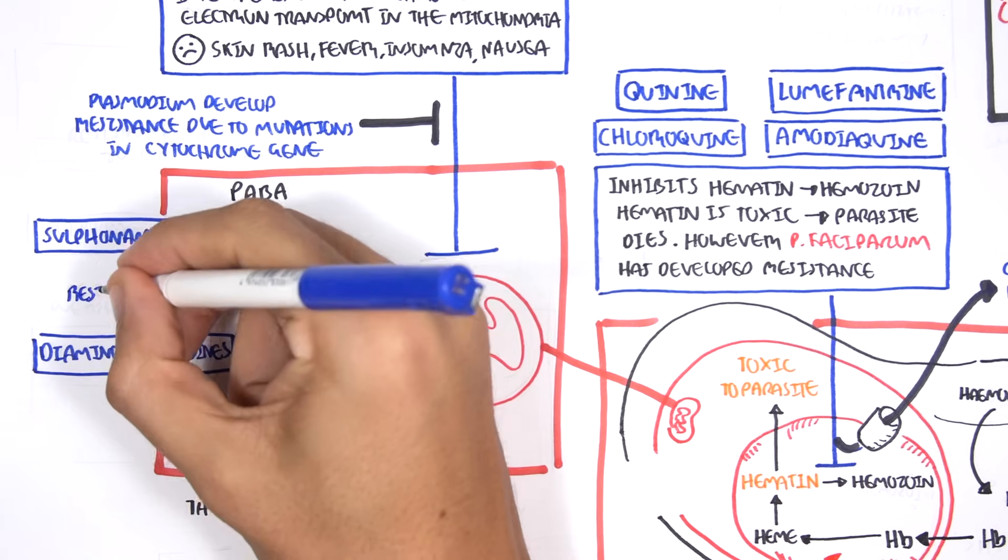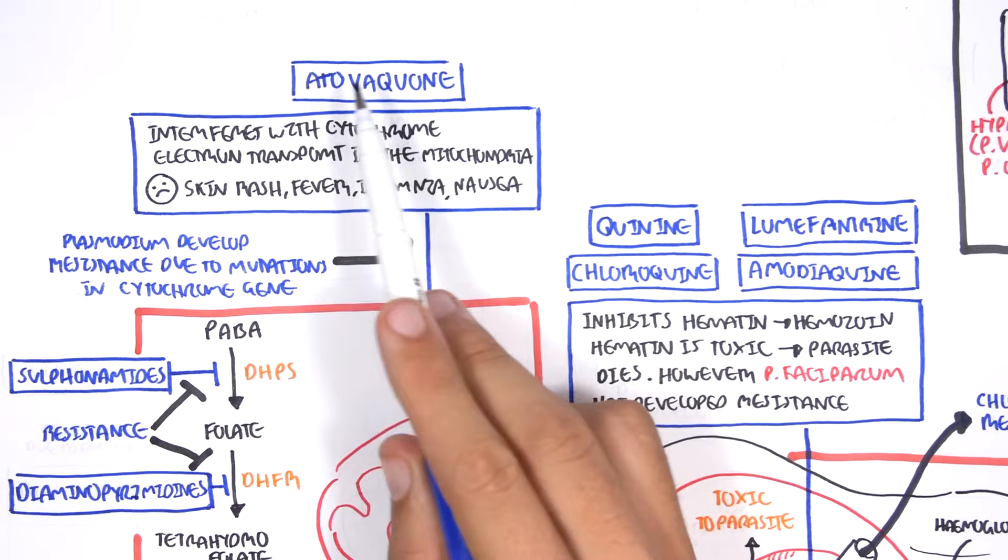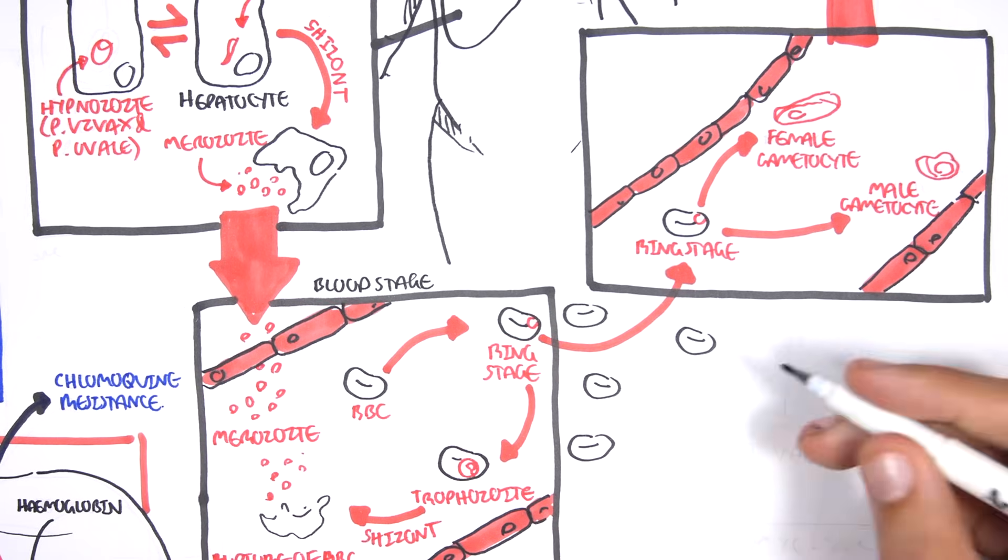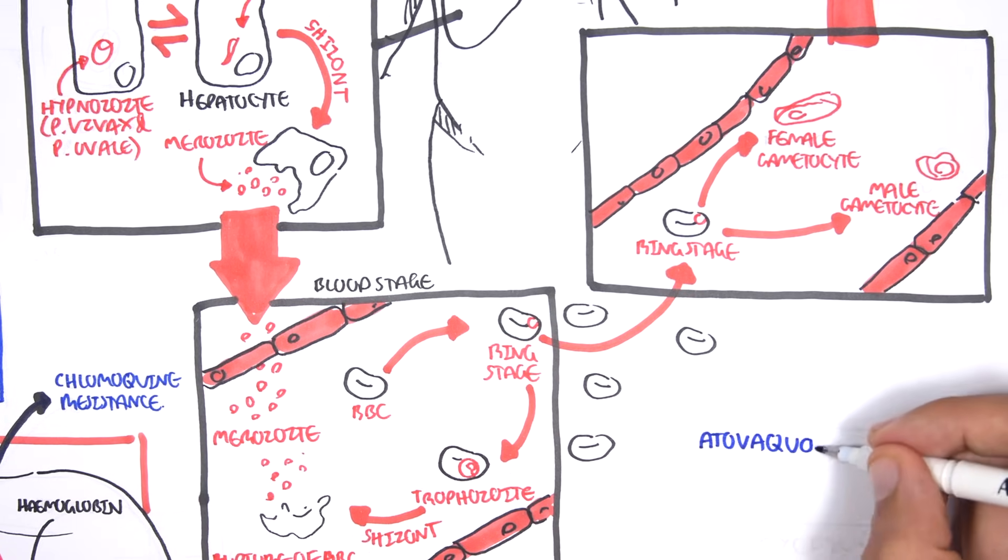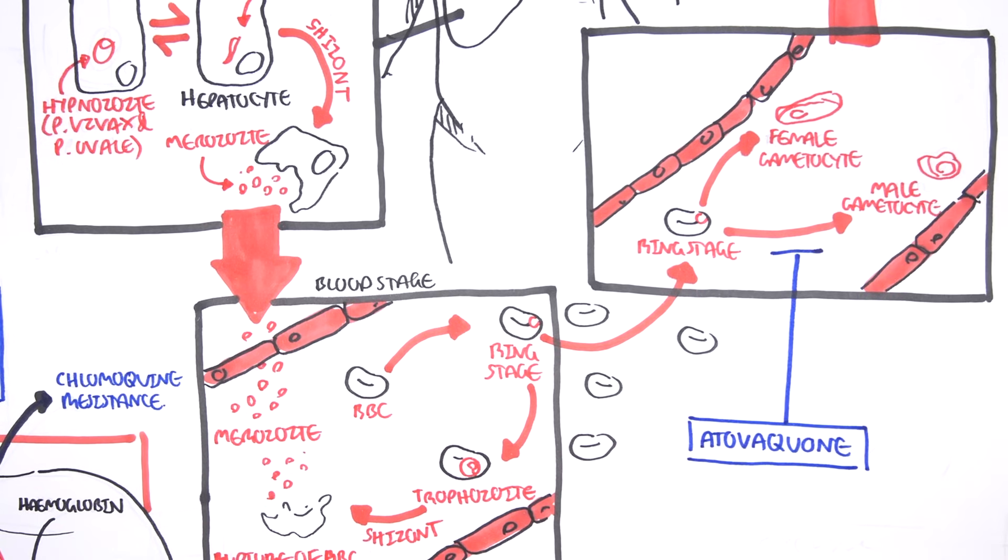The parasite have also been able to develop resistance to these drugs through genetic mutations of the enzyme. Going back to atovaquone, atovaquone inhibits cytochrome, and specifically, it targets the sexual life cycle of the parasite, thus inhibiting gametocyte formation.